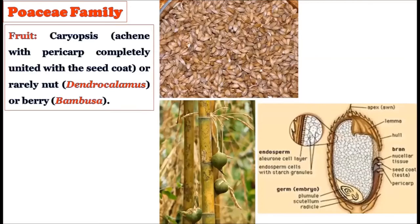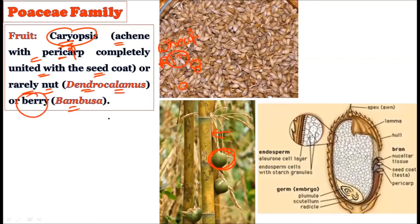The fruit is a caryopsis type — an achene with the pericarp completely united with the seed coat — present in wheat and rice. Rarely, a nut type fruit occurs in Dendrocalamus, or a berry type in Bambusa. Caryopsis is the main fruit type of the Poaceae family; exceptions are the nut and berry.